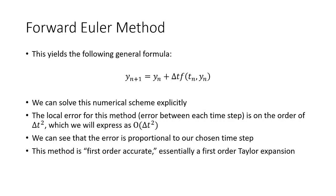And since our error is on the order of Δt squared, we say that this method is, quote, first order accurate. Basically, we've done a first order Taylor expansion of our solution. If we were to do a first order Taylor expansion of our solution, we would basically come up with the same formula here.